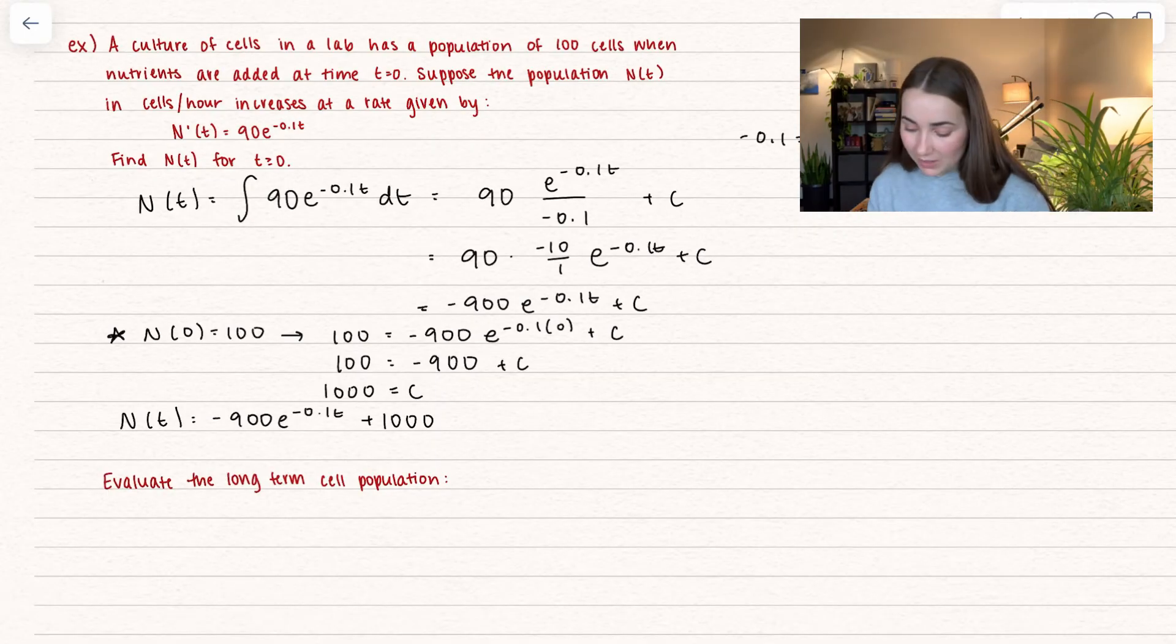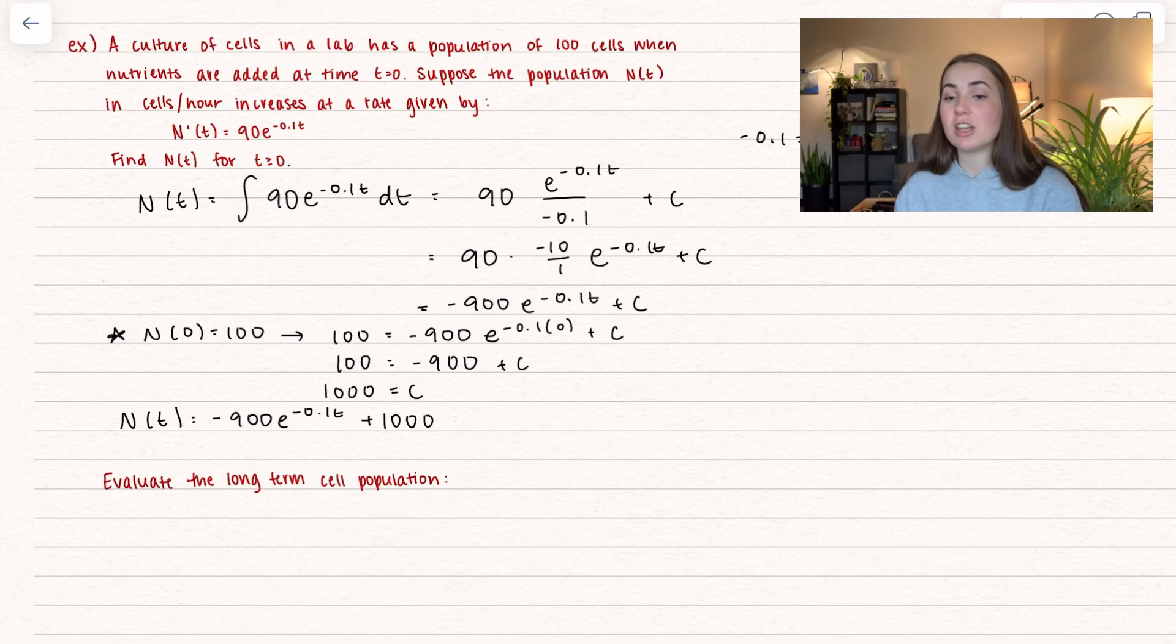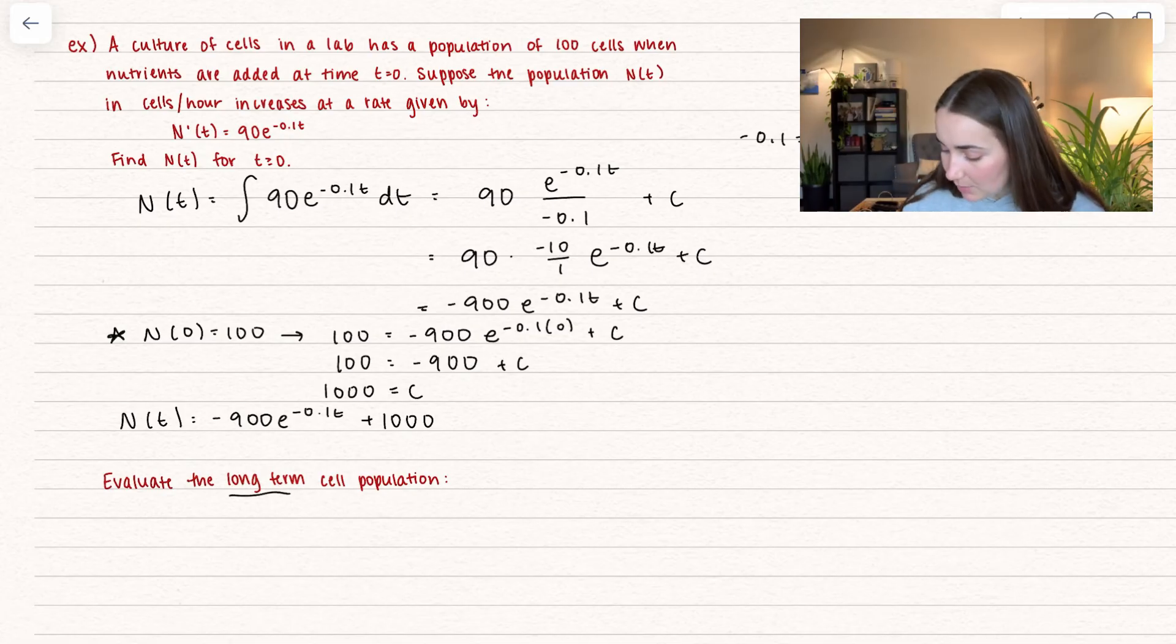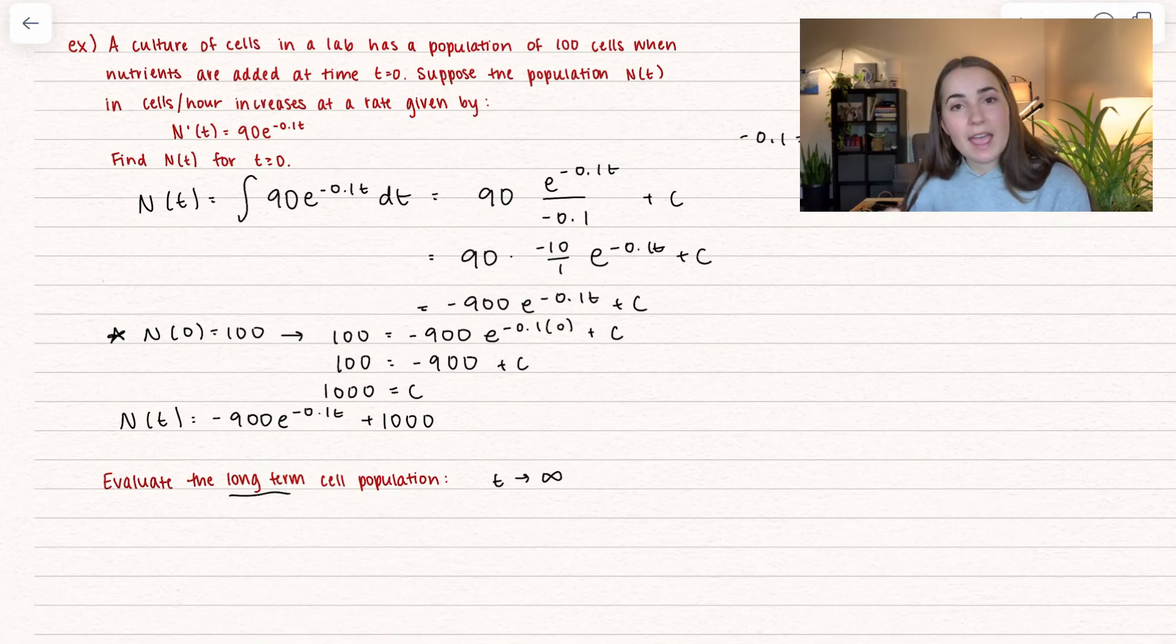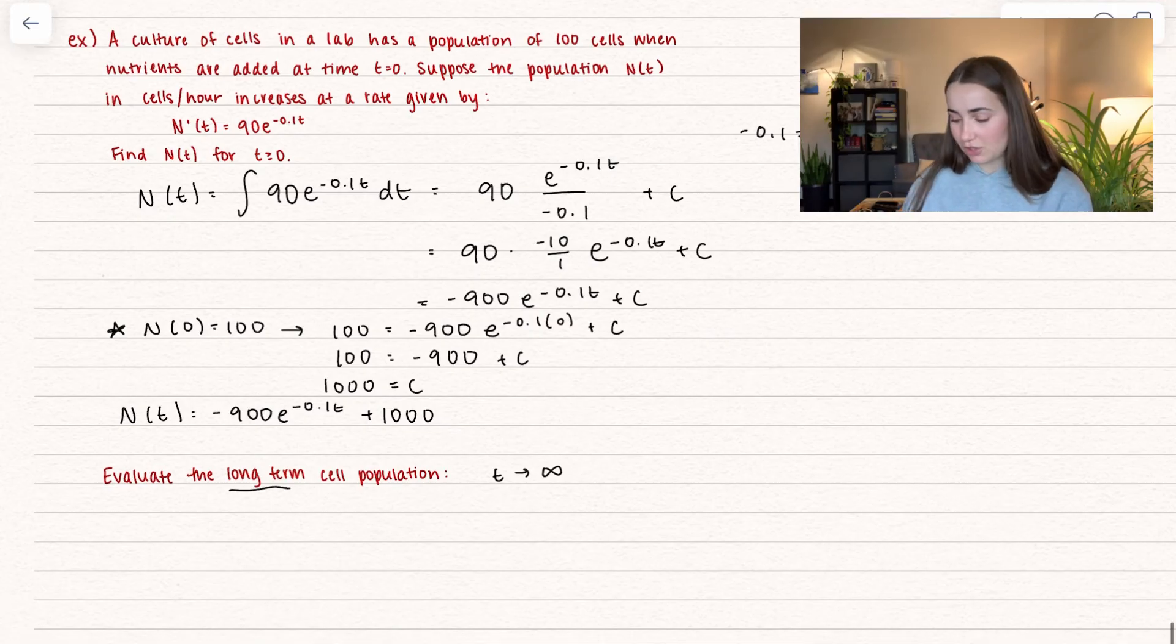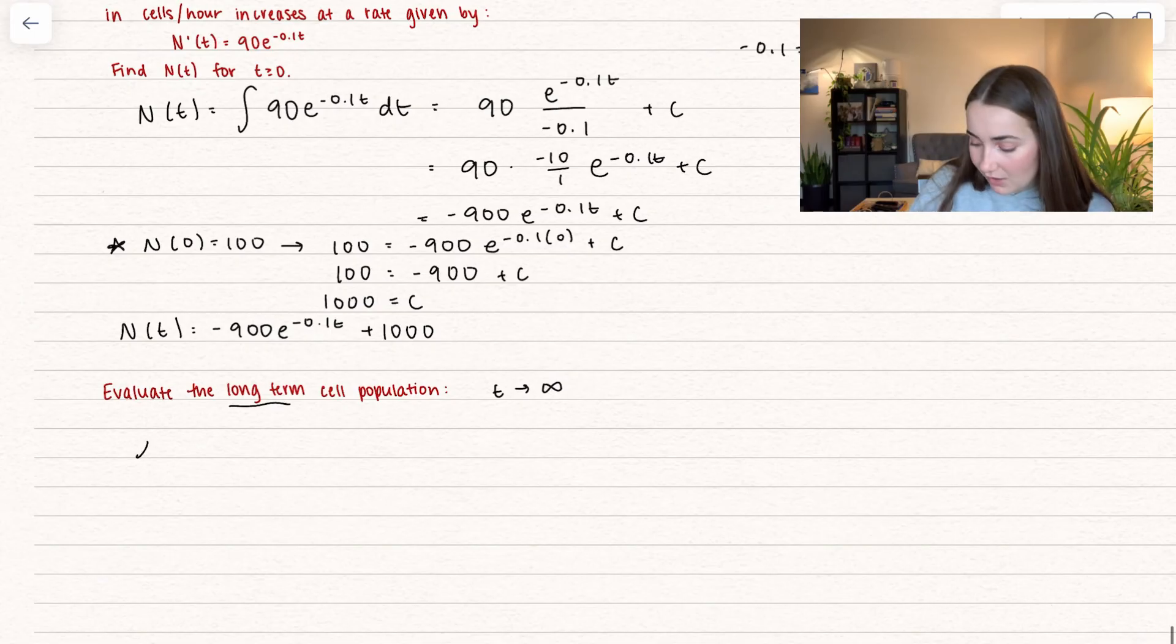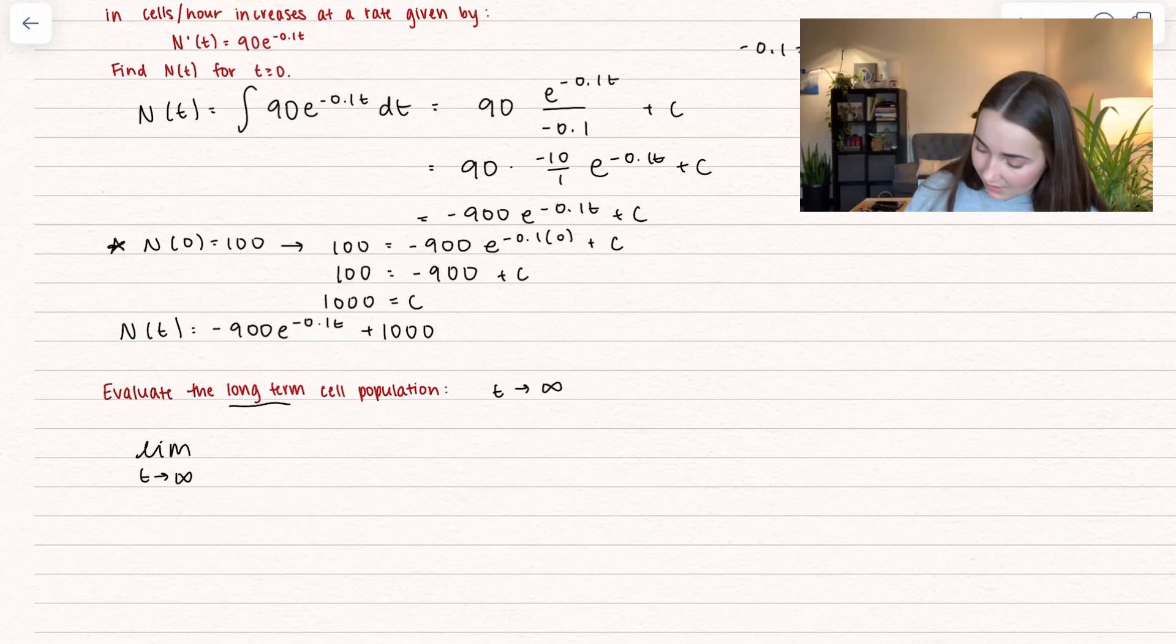Now we want to evaluate the long-term cell population. What does that mean? It means that time is going on forever and forever, so t is approaching infinity. We cannot actually evaluate long-term population because we don't know infinite time. So what we do is take the limit as t approaches infinity. That's why limits are super helpful. We're doing this of our equation.